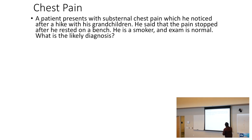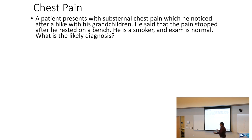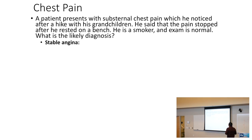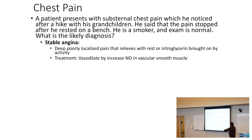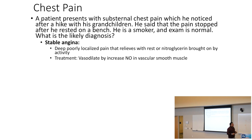A patient presents with substernal chest pain, which he noticed after a hike with his grandchildren. The pain stopped after he rested on a bench. He is a smoker, and exam is normal. This is stable angina. Stable angina is a deep, poorly localized pain that relieves with rest or by activity. The treatment is to give something like nitrates, which will cause vasodilation of the vascular smooth muscle.